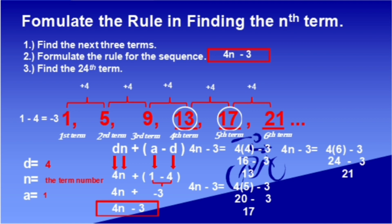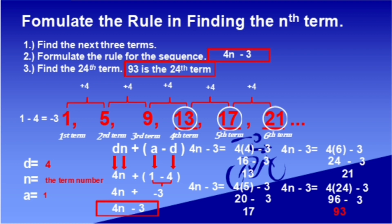Since our answer is correct, let us find the 24th term in this sequence. We have 4n minus 3, and n is replaced by 24 since we're looking for the 24th term: 4 times 24 is 96, minus 3 is 93. Therefore, the 24th term in this series is 93. I hope everything is clear to you. Goodbye, until next time.